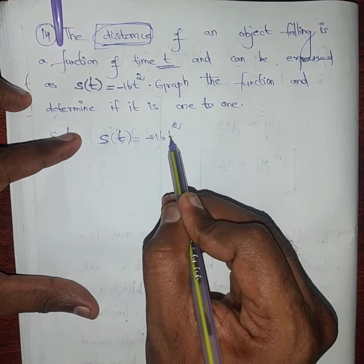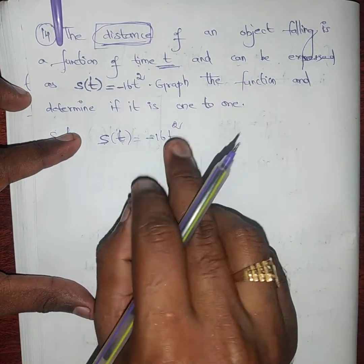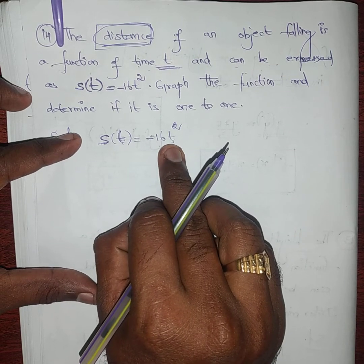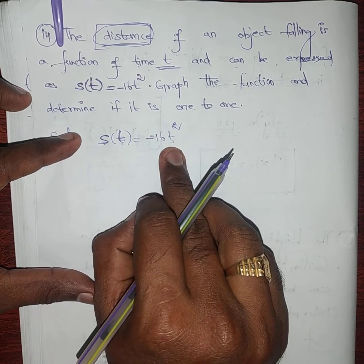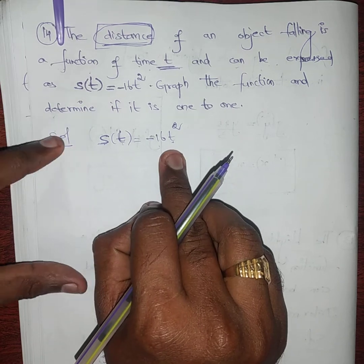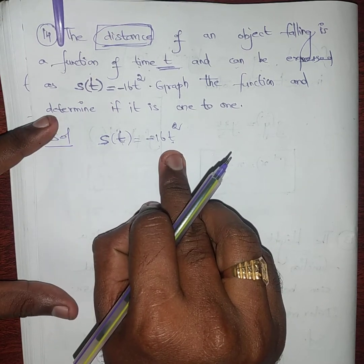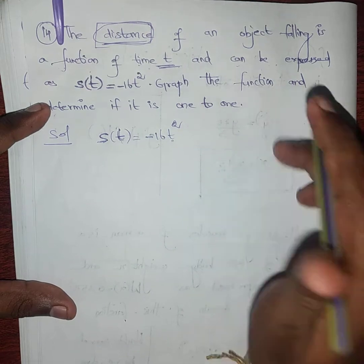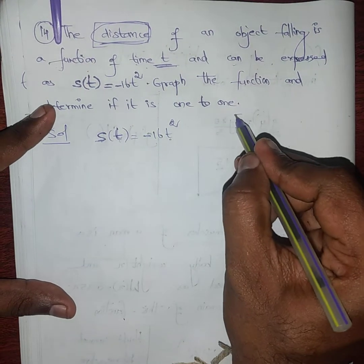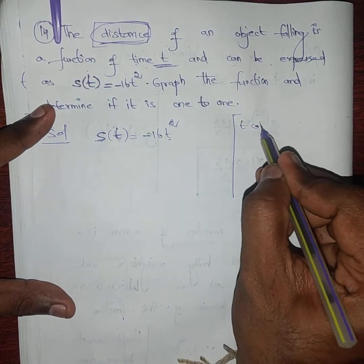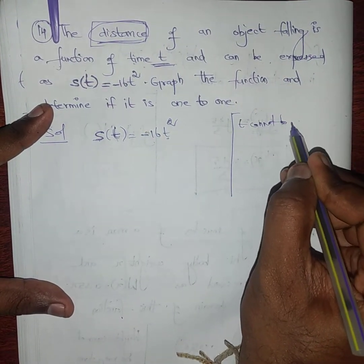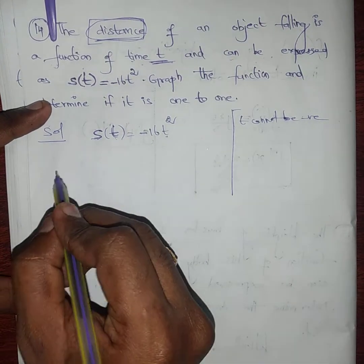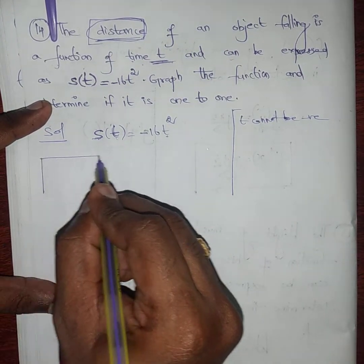We can write s of t, and we can put values like t = 0, t = 1, t = 2. But we cannot put a negative value for t. The question asks us to graph the function. Note carefully: t cannot be negative.